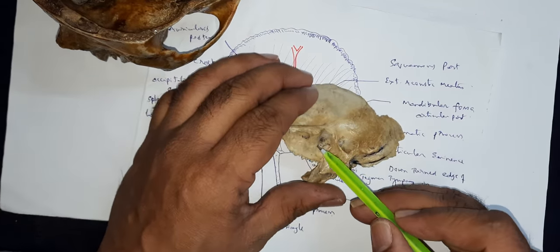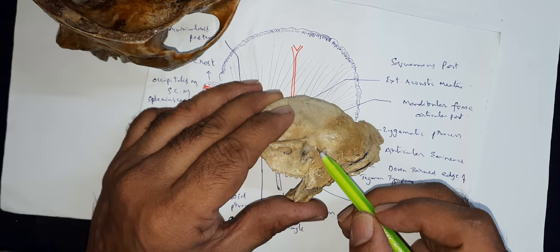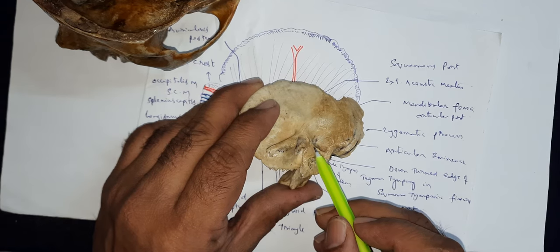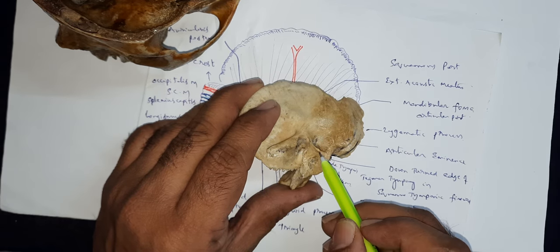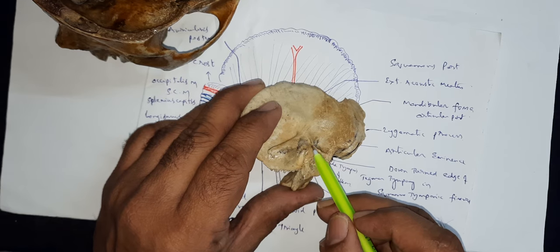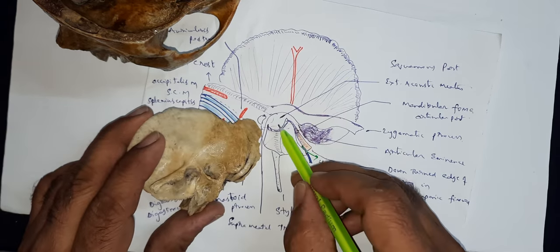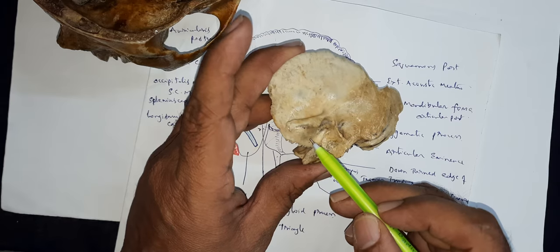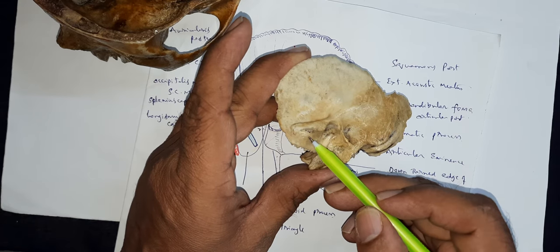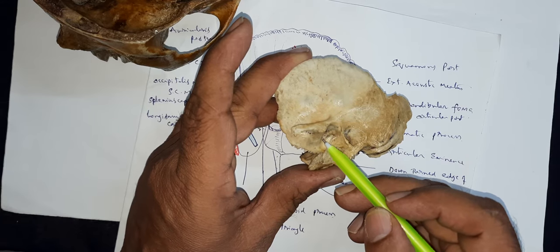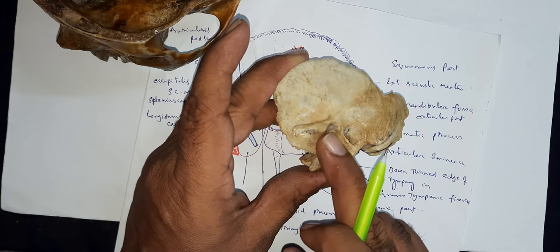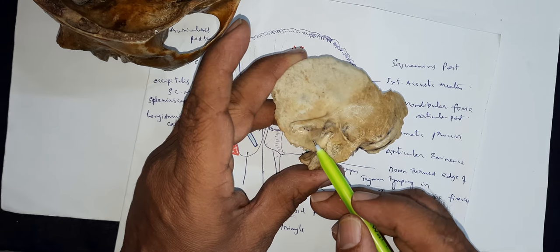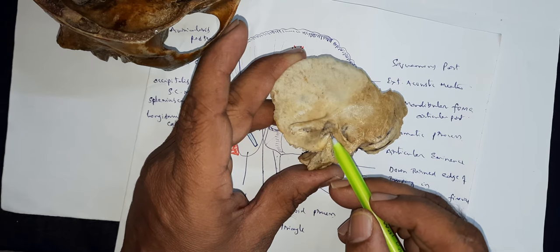If you see the anterior surface of this zygomatic process, between the two roots — the anterior root and posterior root — there is a depression. This entire depression is called the mandibular fossa. This mandibular fossa is limited anteriorly by the articular eminence — an elevated surface. This is the articular eminence.